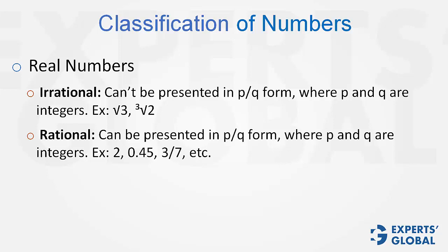Irrational numbers are those which cannot be represented in p by q form, where p and q are integers. Examples are square root 3, cube root 2, basically numbers with the radical sign.